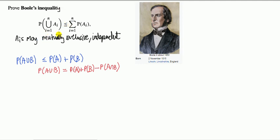Why this result is useful is like suppose we want to calculate probability of at least one of these events happening. That's what this is saying - at least one of the A_1 to A_n events are happening.